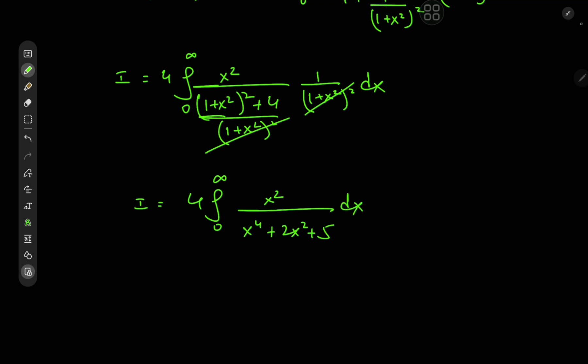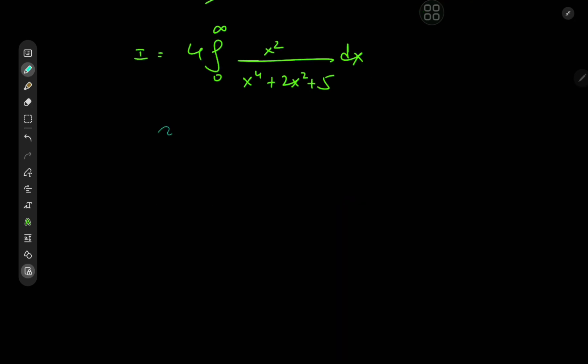And now for some complex analysis. We'll define a complex-valued f(z) as z squared divided by z to the fourth power plus 2z squared plus 5.